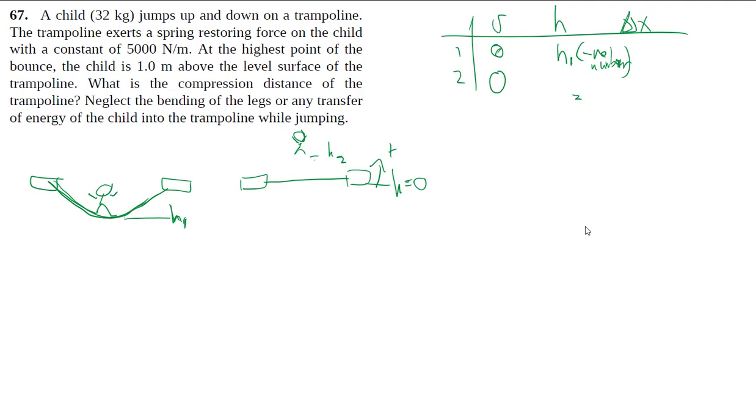And then we have some h2 which we know is one meter. My delta x is zero to end up with, and it gets compressed by the same amount of h1.